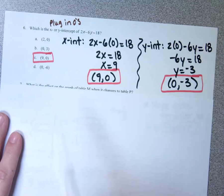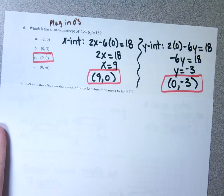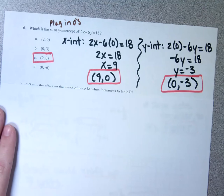So the only one of these answer choices that is correct is (9, 0). There are other ways I could do this problem — I could put this in slope-intercept form from the very beginning — but I think this is a real easy way of doing it just by plugging in your zeros.